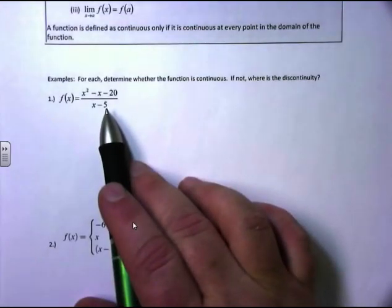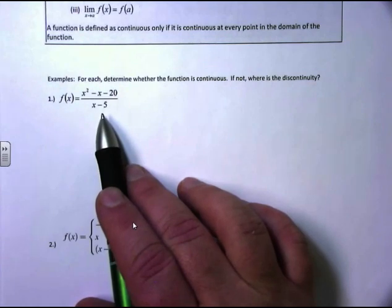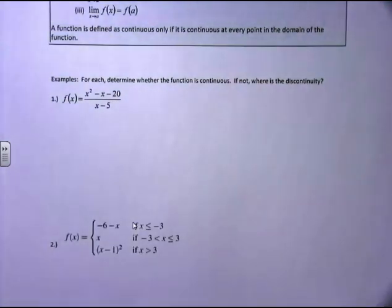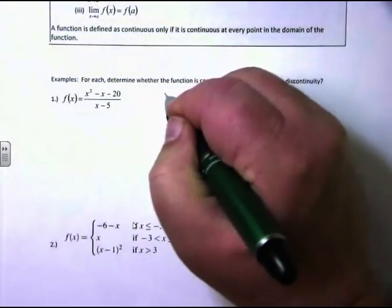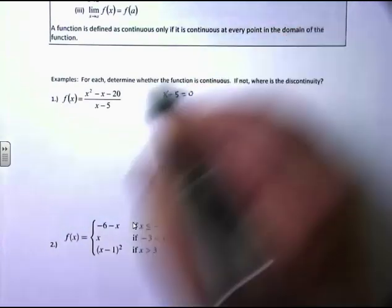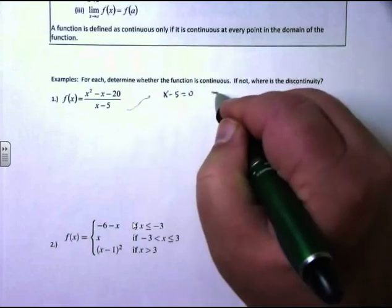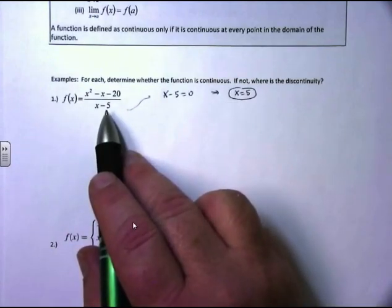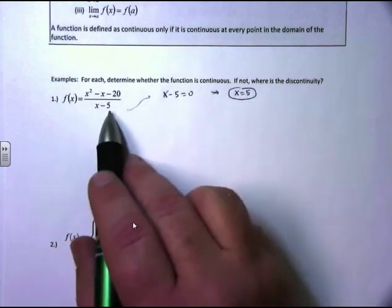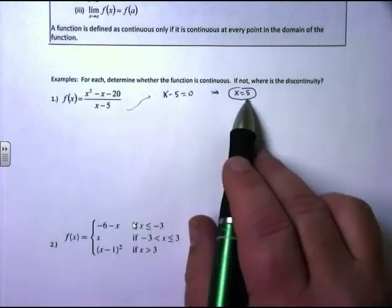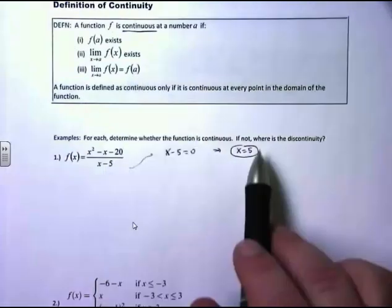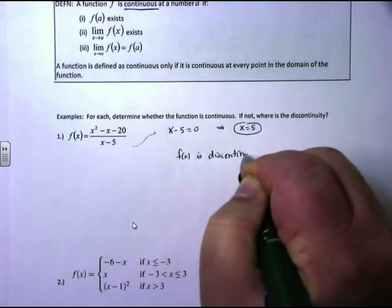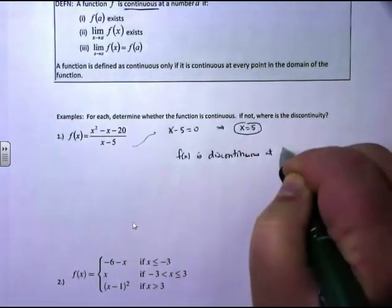On this particular problem, I've got f of x equals x squared minus x minus 20 divided by x minus 5. I have a domain issue — I'm not allowed to divide by 0. To figure out where it's discontinuous, I take the denominator x minus 5 and set it equal to 0, which gives me x equals 5. When x equals 5, 5 minus 5 is 0, so I'd be dividing by 0. Therefore, this function f of x is discontinuous at x equals 5.